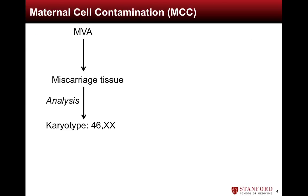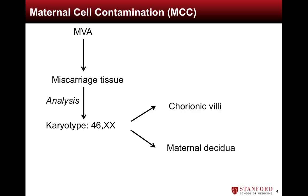A 46-XX karyotype result from analysis of miscarriage tissue, however, can represent embryonic tissue in the chorionic villi or can be due to analysis of maternal decidua, which is referred to as maternal cell contamination, or MCC. We will further explain the terms chorionic villi and maternal decidua on the next slide.